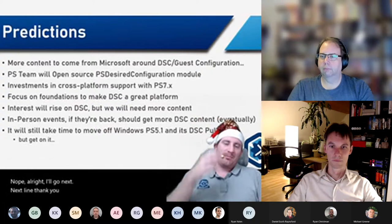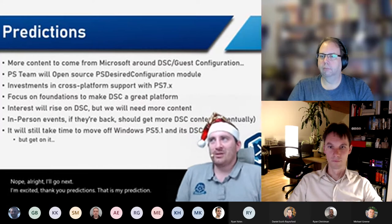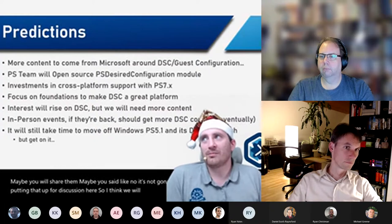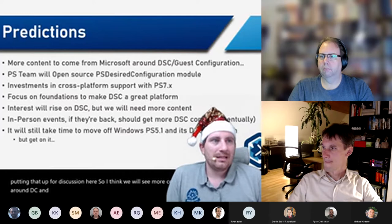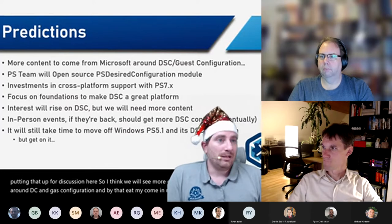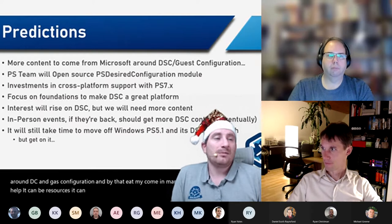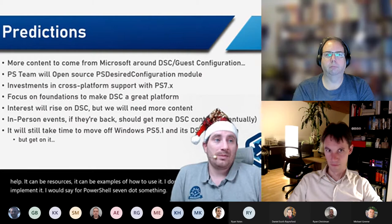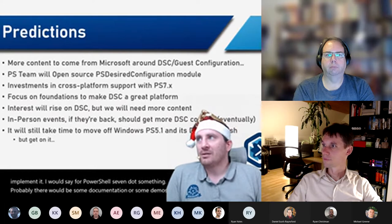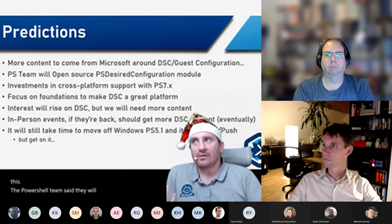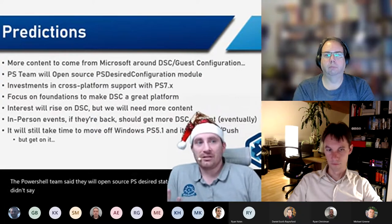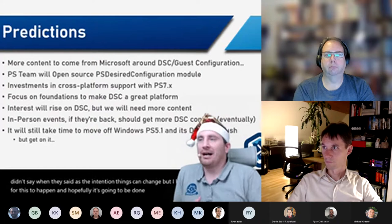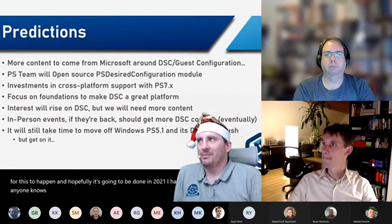Predictions — just putting these up for discussion. I think we'll see more content from Microsoft around DSC and Guest Configuration, whether help, resources, or examples. Probably for PowerShell 7.something there'll be documentation or demos. The PowerShell team said they will open source the PS Desired State Configuration module — they didn't say when, but there's a strong desire for this. I'm hoping it gets done in 2021, though no one knows for certain.